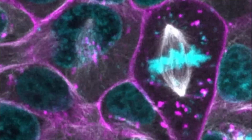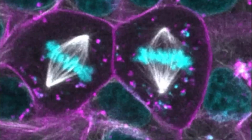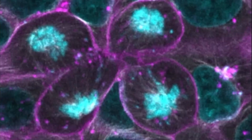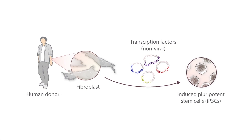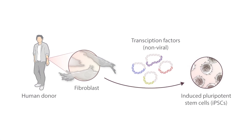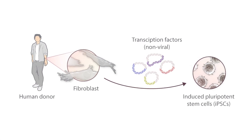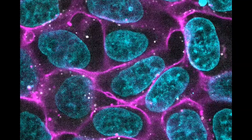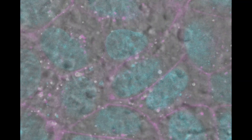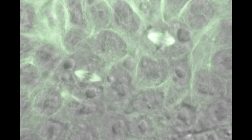To develop these lines, we use CRISPR to insert fluorescent tags into genes of interest in the human-induced pluripotent stem cell line WTC11. This line was developed by the Conklin Laboratory at the Gladstone Institute from a healthy donor.